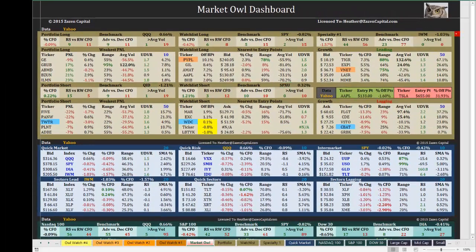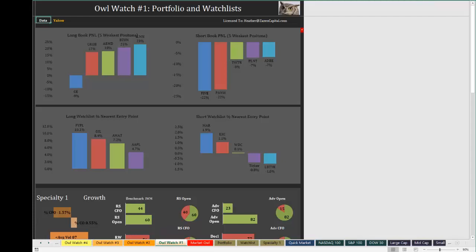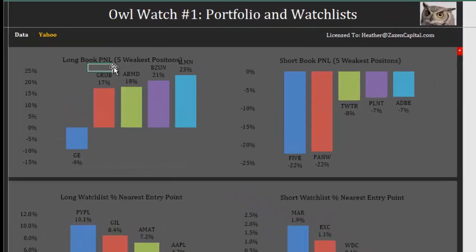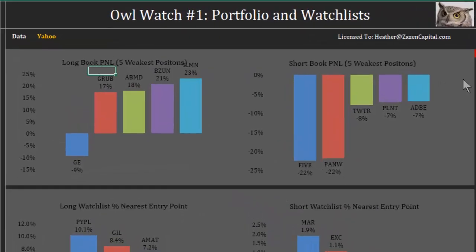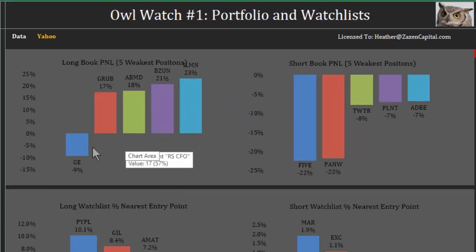There is one other place that shows portfolio information and that is on the Owl Watch number one tab. If you go to that page, you can quickly see your long book and your short book — the weakest five positions for each. That allows you to keep a close eye on the stocks that are in your portfolio that are underperforming on an intraday or daily basis.